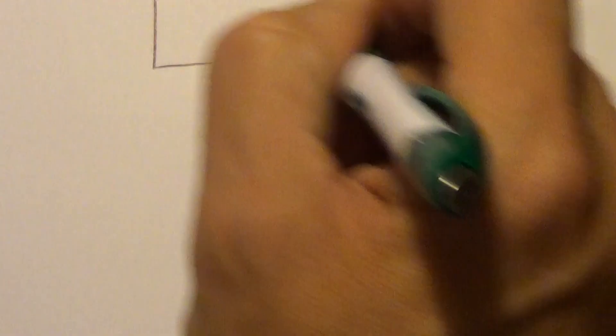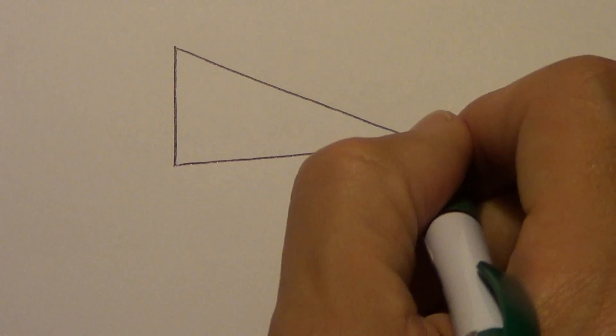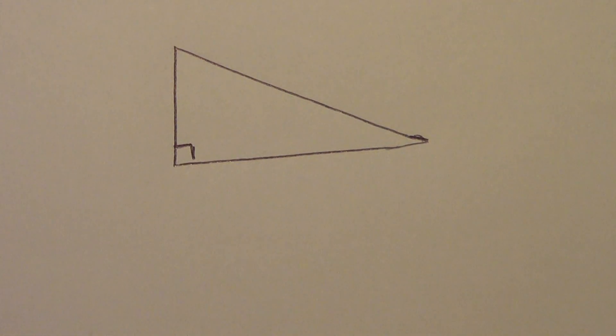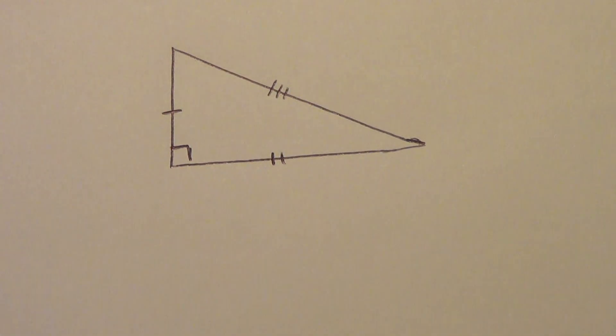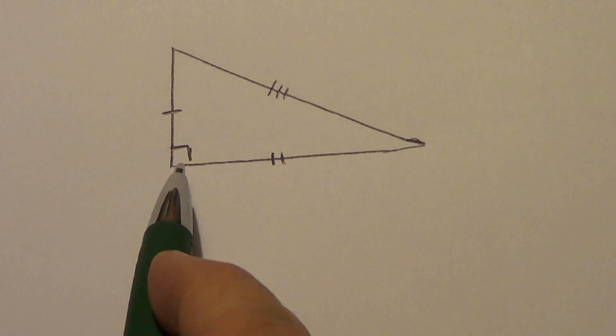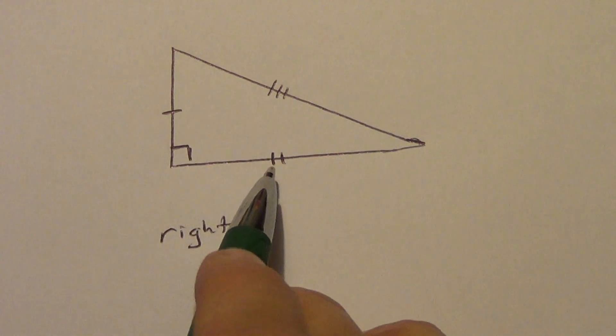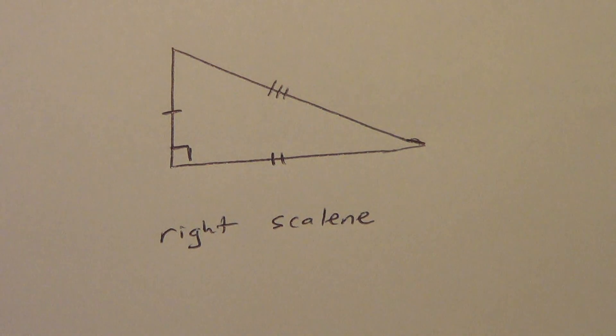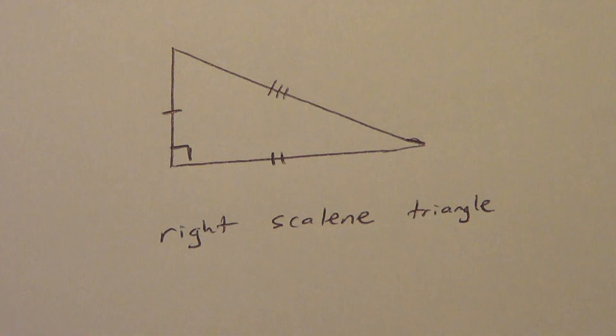So let's say I have this kind of triangle. And let's say that I put this little symbol right here. And then these all get different marks. All right, so what kind of triangle would this be? Well, we know from this that it's a right triangle. And since none of the sides are congruent, it would be scalene. So this is a right scalene triangle. Okay, so we can do that.